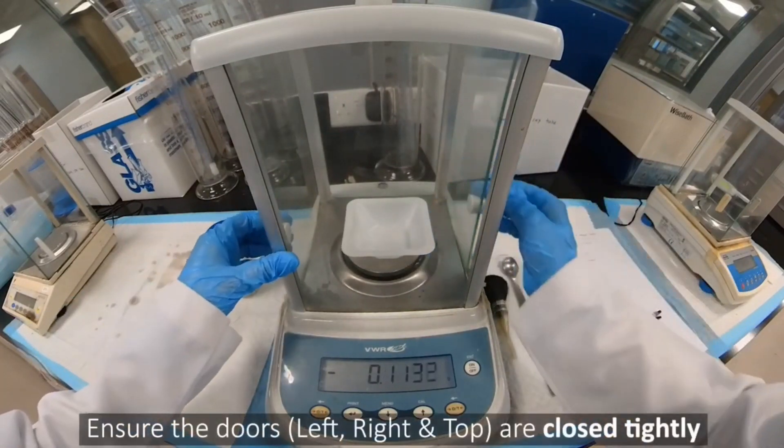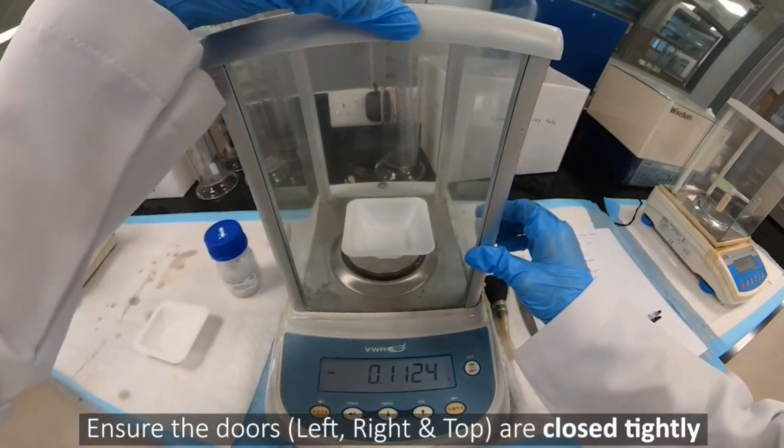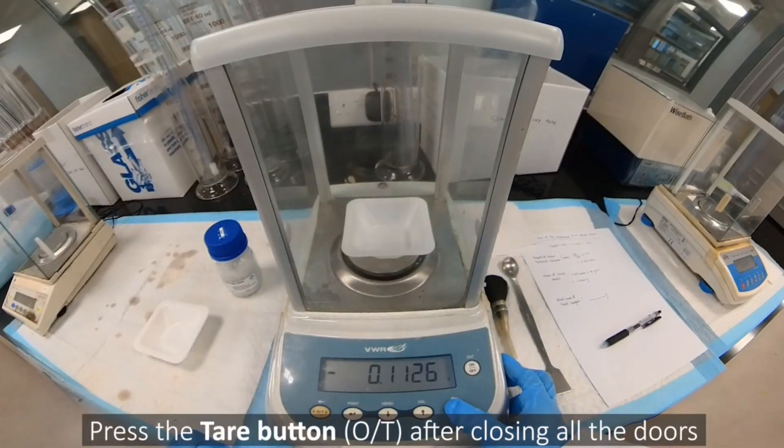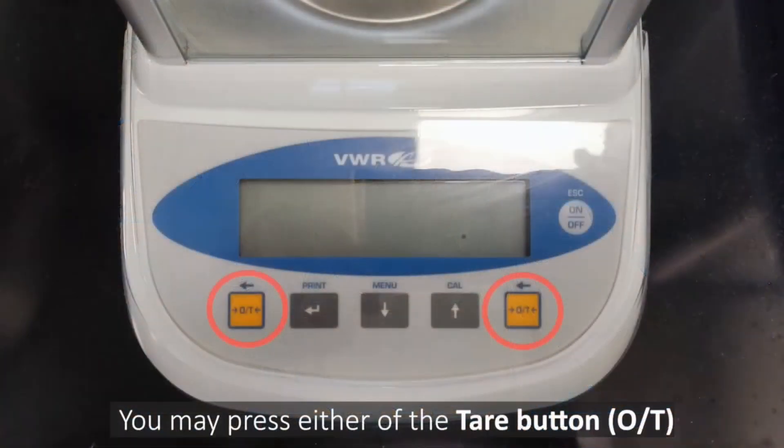Ensure the doors, left, right and top, are closed tightly. Press the tare button after closing all the doors. You may press either one of the tare buttons.